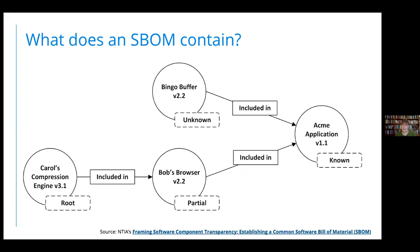This group sat down and after many months of debate, worked on coming up with a minimum viable SBOM. There was a group called the framing group working on framing component transparency. They used a simple reference example: you've got your application, it's including a buffer from Bingo, a browser from Bob, and Bob's browser includes a compression engine. The questions were: do you know everything that's here? Do you know the known unknowns? Can you be definitive about what's actually there and what's not there? Those were the aspects they honed in on to define what a software bill of materials should contain - just the components and the relationships, nothing about vulnerabilities or licensing.